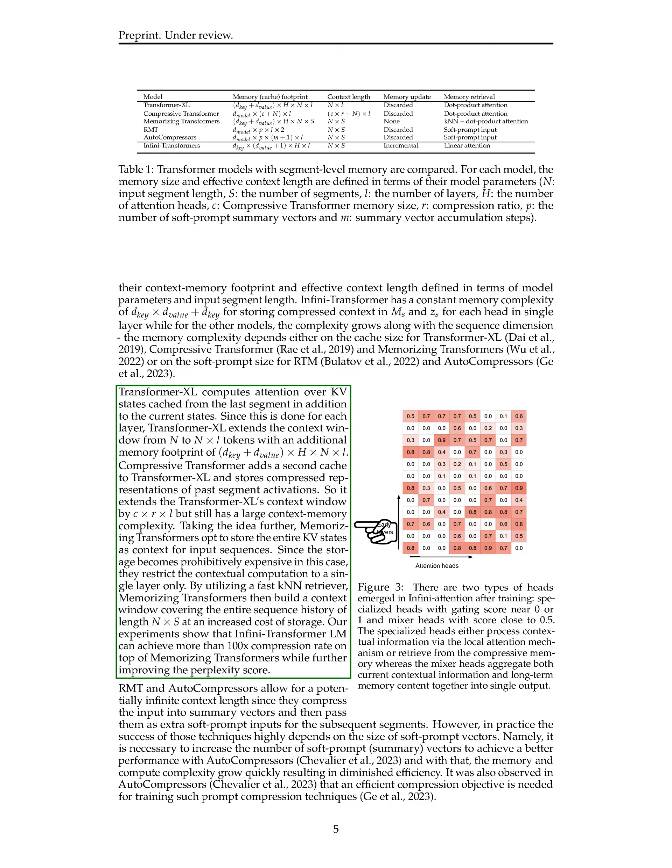In this section, we assessed our InfiniTransformer models on tasks involving very long input sequences: long-context language modeling, 1M-length PASCII context block retrieval, and 500K-length book summarization. For the language modeling task, we trained our models from scratch, while for the PASCII and book summarization tasks, we continuously pre-trained existing models to showcase the adaptability of our approach. For the long-context language modeling task, we trained and evaluated small InfiniTransformer models on PG-19 and archive math benchmarks.